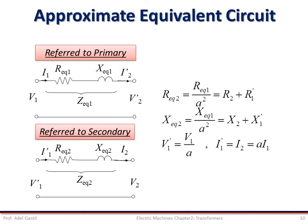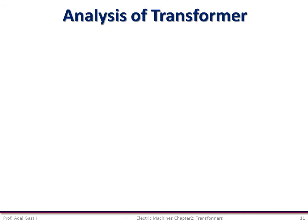The parameters of these two approximate circuits are interrelated with a set of equations. Notice that in the case of the approximate circuit referred to the secondary side, the primary winding parameters and variables are assigned a prime symbol, which designates that they are not the actual values. The voltages and currents are also related using the transformer turns ratio. Now, let's move to the analysis of the transformer characteristics and performance using the equivalent circuits we have just studied.